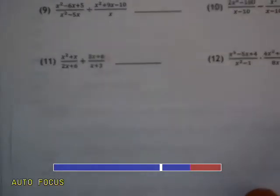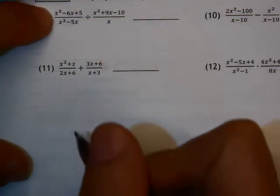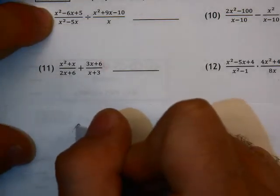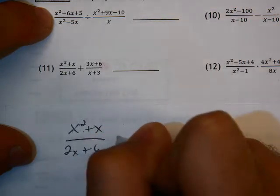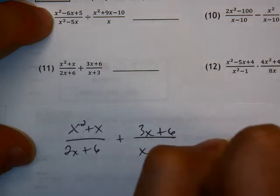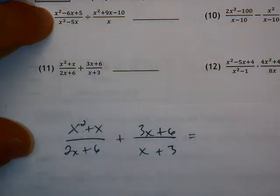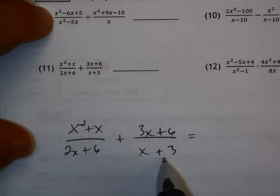I'm going to zoom in a little bit. To start off, I don't have a ton of room here, so I'll write this again: x squared plus x over 2x plus 6 plus 3x plus 6 over x plus 3. One thing I'm going to do is, when I'm adding, I need to have common denominator, and I don't yet.